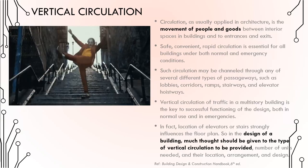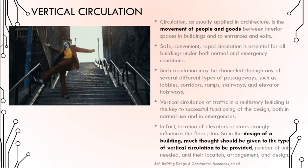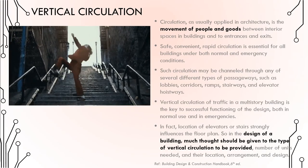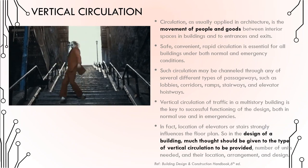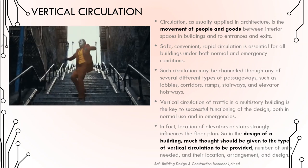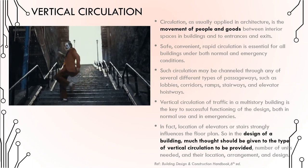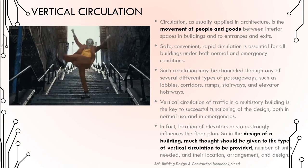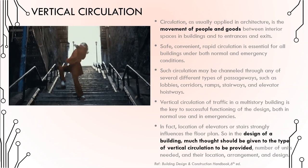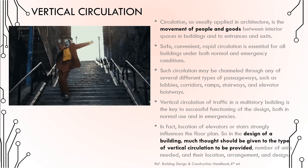So what do we mean by vertical circulation? Let's talk about circulation first. Circulation, as usually applied in architecture, is the movement of people and goods between interior spaces in buildings and to entrances and exits — meaning there is movement of people or goods. Circulation may be channeled through several different types of passageways such as lobbies, corridors, ramps, stairways, and elevator hoistways — either through spaces or through mechanical equipment.